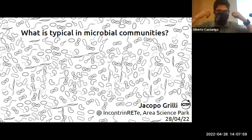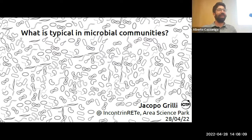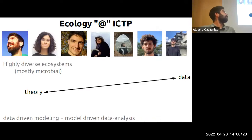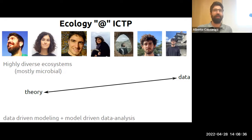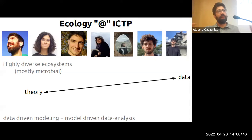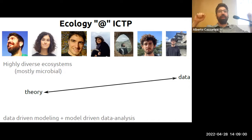Thanks for the introduction. In general, we are interested in ecology and evolution. The problems we are interested in are problems relating to highly diverse ecosystems — ecological communities where there are many many species coexisting in the same environment. We are mostly interested in theory: theoretical and mathematical models that describe the dynamics of these populations.